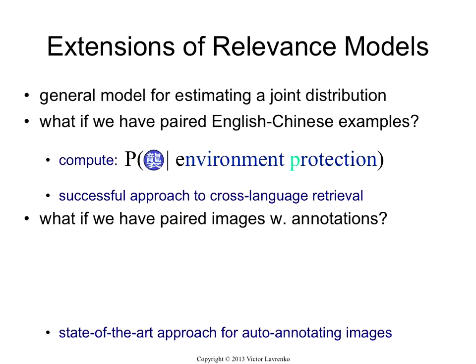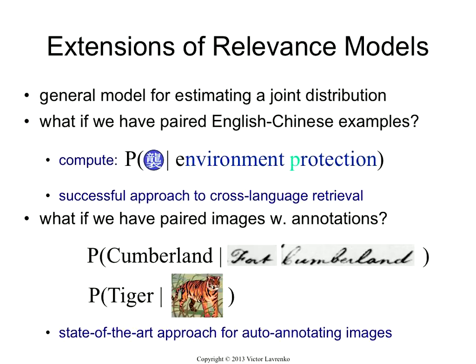What you can use this for is cross-language retrieval. For example, if you were monitoring Twitter and Weibo at the same time, you could actually measure similarities between Chinese tweets and English tweets in almost real time. You can use it for multiple languages. You can also use it for other tasks such as image annotation and image retrieval. If you had images and found a way to convert them to a set of discrete features, you can estimate probabilities like that — for handwriting or photographs. It's one of the state-of-the-art approaches for image retrieval and annotation.